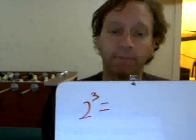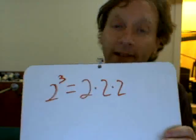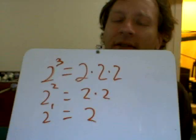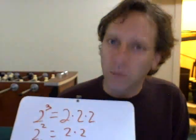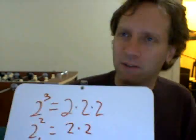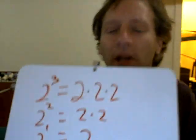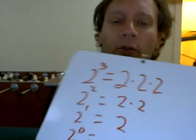Two cubed means two times itself three times — 2 × 2 × 2. Two squared is 2 × 2, and 2 to the first is two times itself one time. Already things start to get a little strange — two times itself one time? But when you get to 2 to the 0, saying it's two times itself zero times is just nonsense. You can't multiply something times itself zero times.